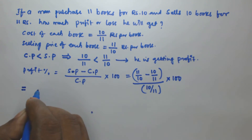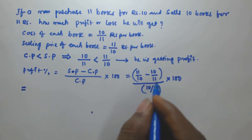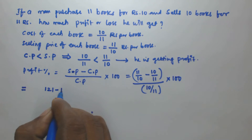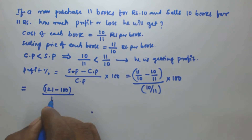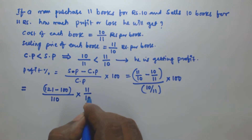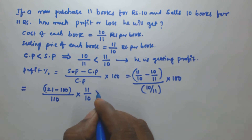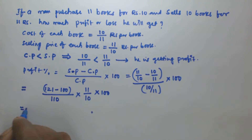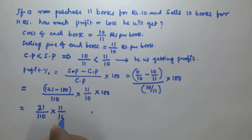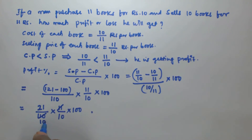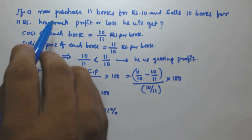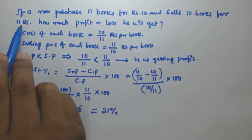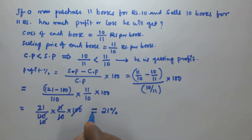Solving this: we get 11×11 = 121 minus 10×10 = 100 in the numerator, and the denominator is 10×11 = 110. So 121 minus 100 = 21, divided by 110, into 100. This gives us 21 into 100 divided by 110, and the 100s cancel, giving us 21 percentage. So if a man purchases 11 books for 10 rupees and sells 10 books for 11 rupees, he gets 21% profit.